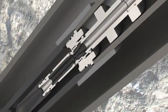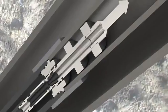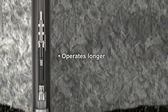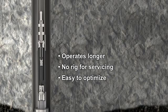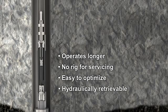With no moving parts, the JJ Tech downhole jet pump operates longer with reduced wear, servicing, and downtime. It needs no rig for servicing, is easy to optimize, and is retrieved to the surface by pumping in reverse.